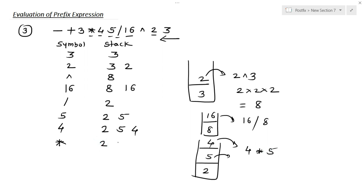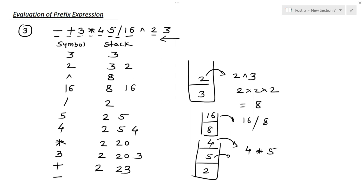The stack now contains 2 and 20. The next symbol is 3 — it goes into the stack, so we have 2, 20, and 3. The next symbol is plus. 2 remains as it is; the top of the stack are 20 and 3, so 3 plus 20 equals 23. The next symbol is minus — only 2 operands are left: 23 and 2. So 23 minus 2 equals 21. This is our final answer for the above prefix expression.